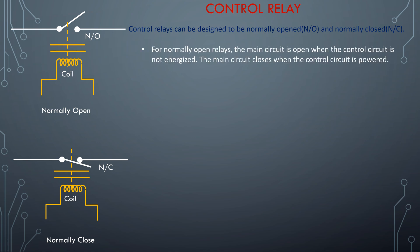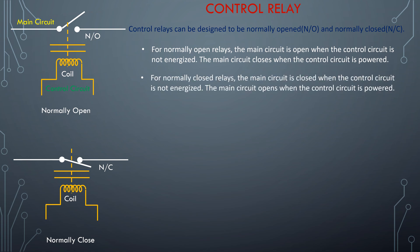For normally open relays, the main circuit is open when the control circuit is not energized, and the main circuit closes when the control circuit is powered. For normally closed relays, the main circuit is closed when the control circuit is not energized, and the main circuit opens when the control circuit is powered.